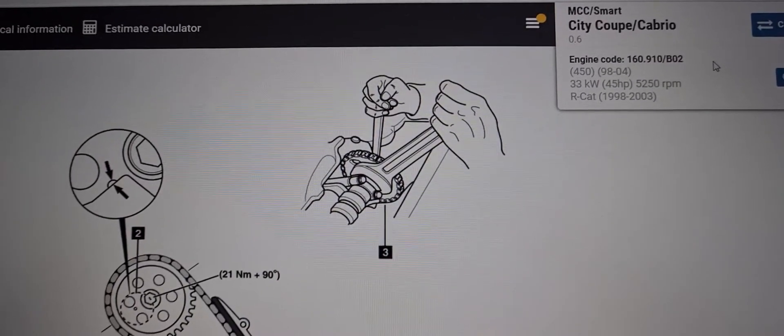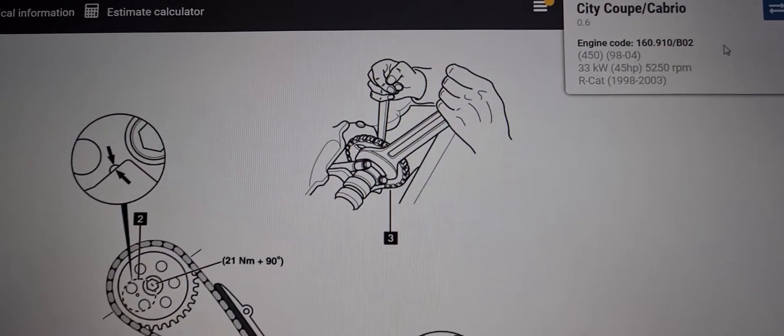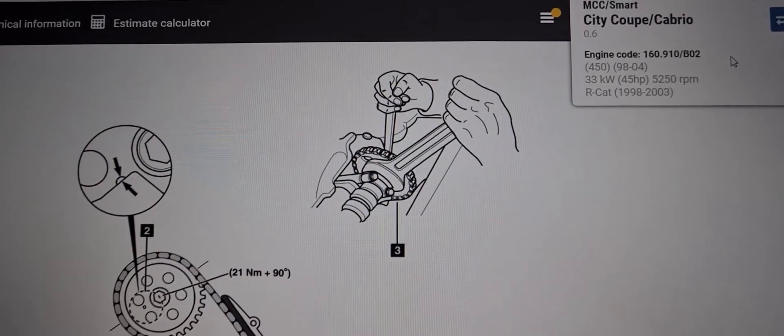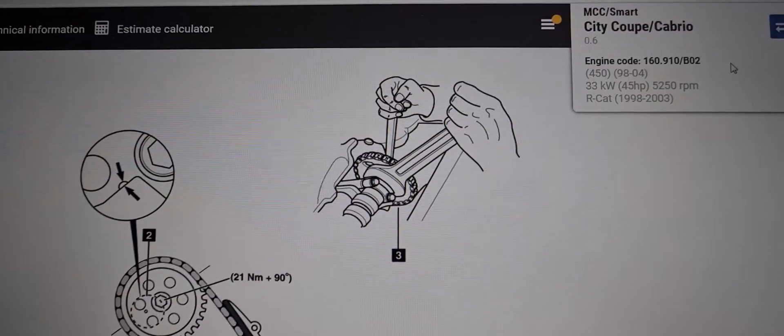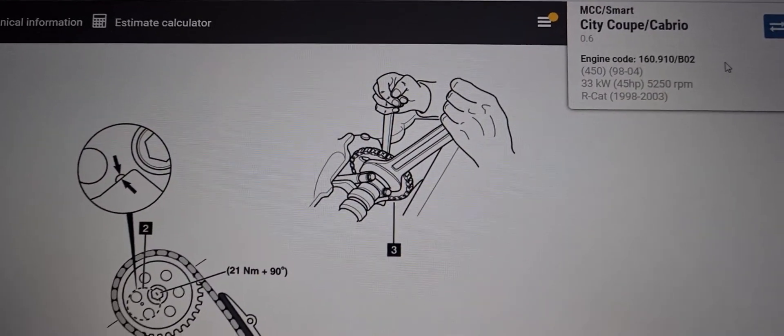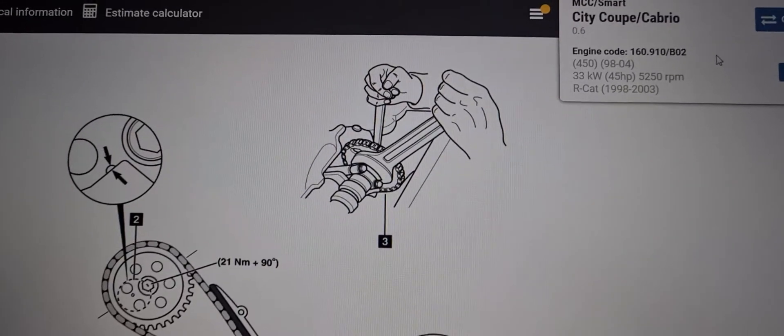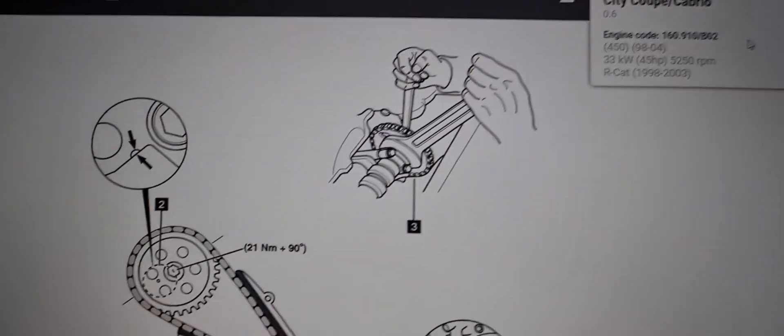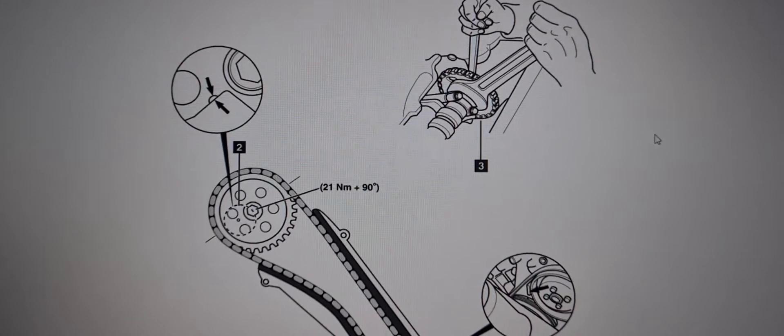Hi everyone, today we're looking at the timing chain diagram and the drive belt diagram for a Smart City Coupe or the Cabrillo model, 0.6 engine, any model between 1998 and 2003. Here's the diagram for the timing chain first.